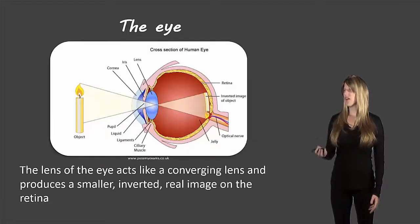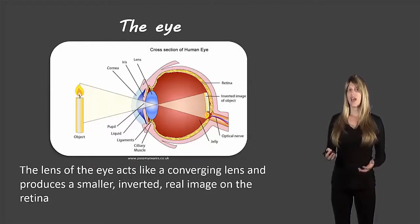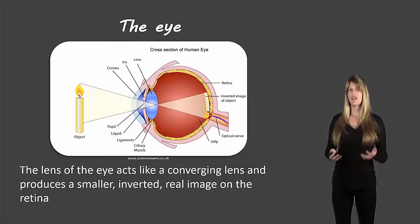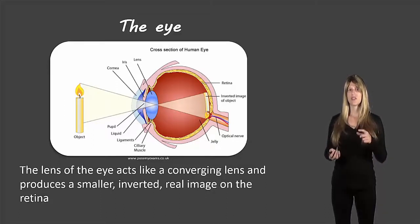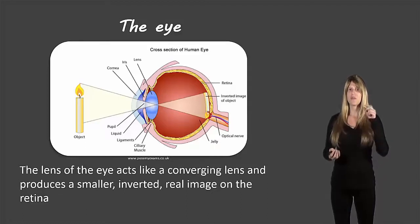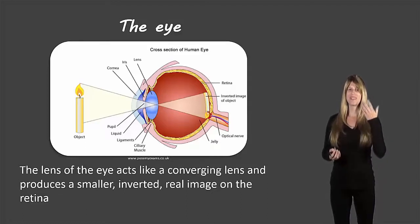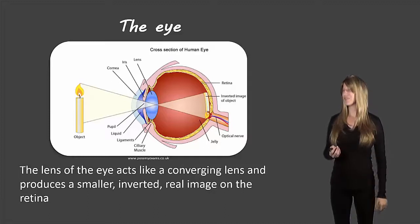The eye has a lens inside of it, just like the lenses we've been working with in class, except instead of being hard lenses formed out of acrylic or glass, these lenses are a little bit more squishy and they're formed inside your eye out of biological materials.